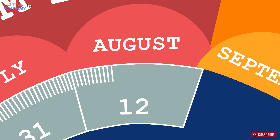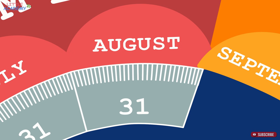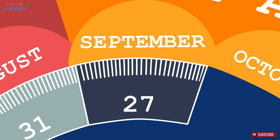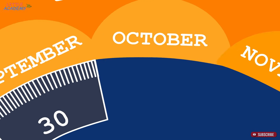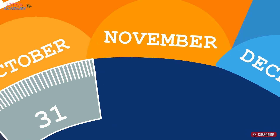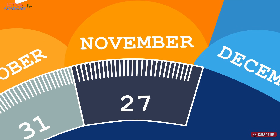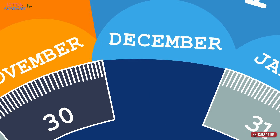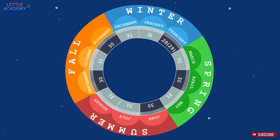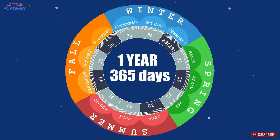August also has 31 days, September has 30 days, October has 31 days, November has 30 days, and December has 31 days. So a year has 365 days, or 366 days on leap years.